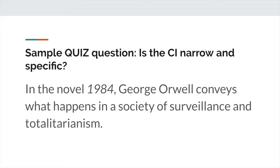Next. The television and video game series Pokemon conveys the steps to become successful. Is this narrow and specific? The answer is no. Now, this one oftentimes trips up students because they become used to this standard having a word like 'what' in the CI to cue you into the fact that it's vague. But here, you'll see it's the exact same type of vagueness. What are the steps to become successful? It could be hard work, resiliency, or courage. It's not clear what it takes to be successful based on this particular CI, which makes it vague.